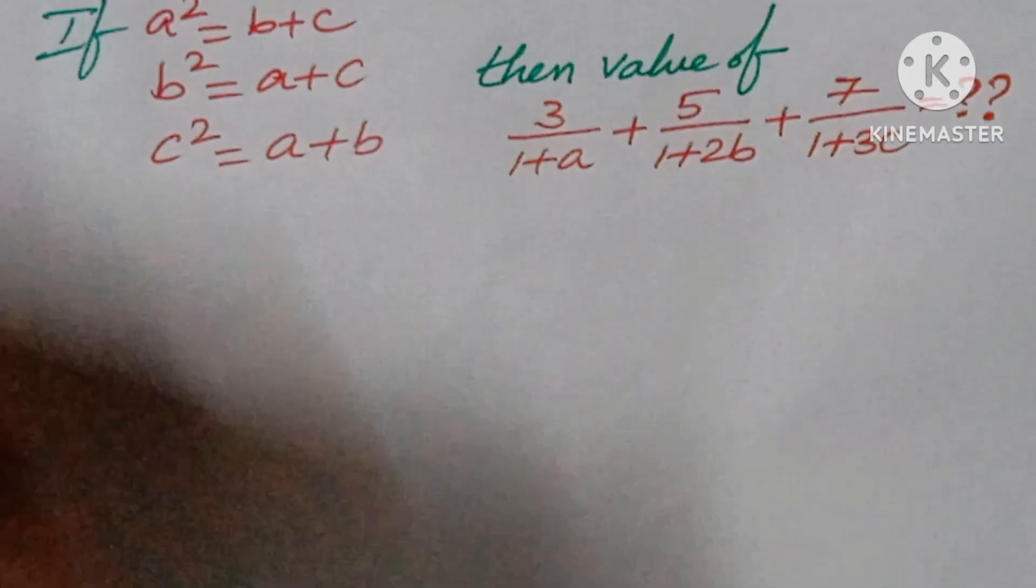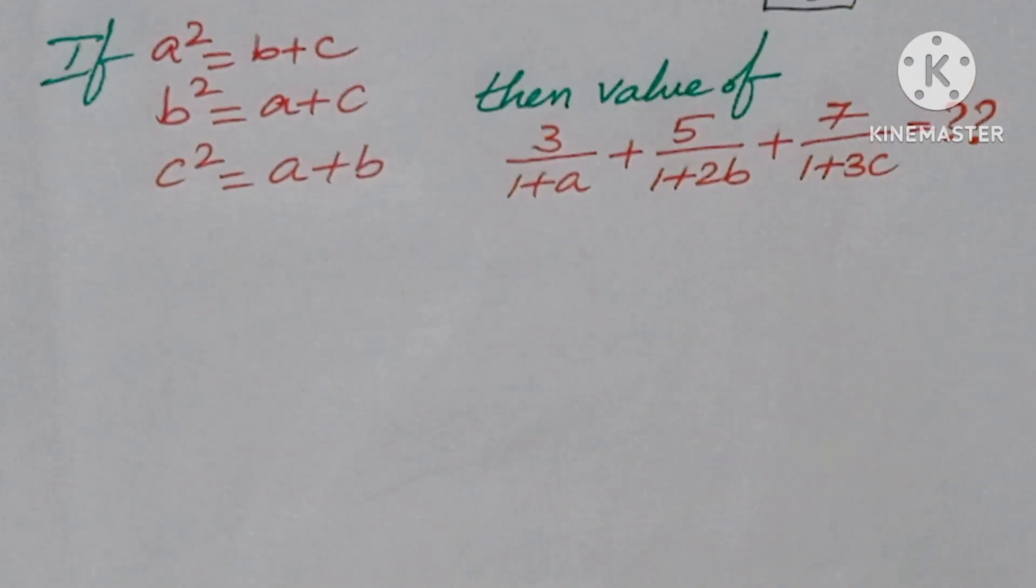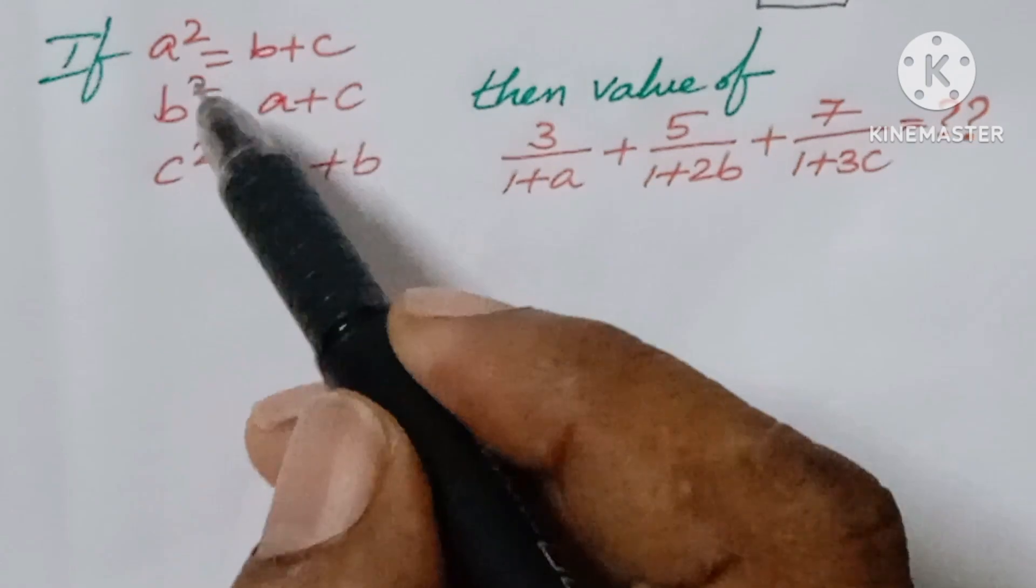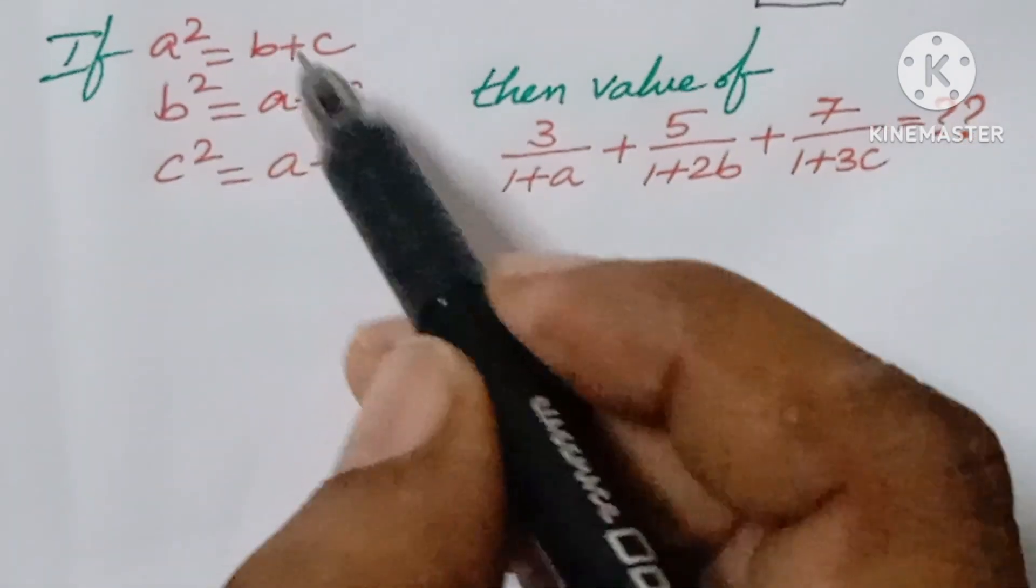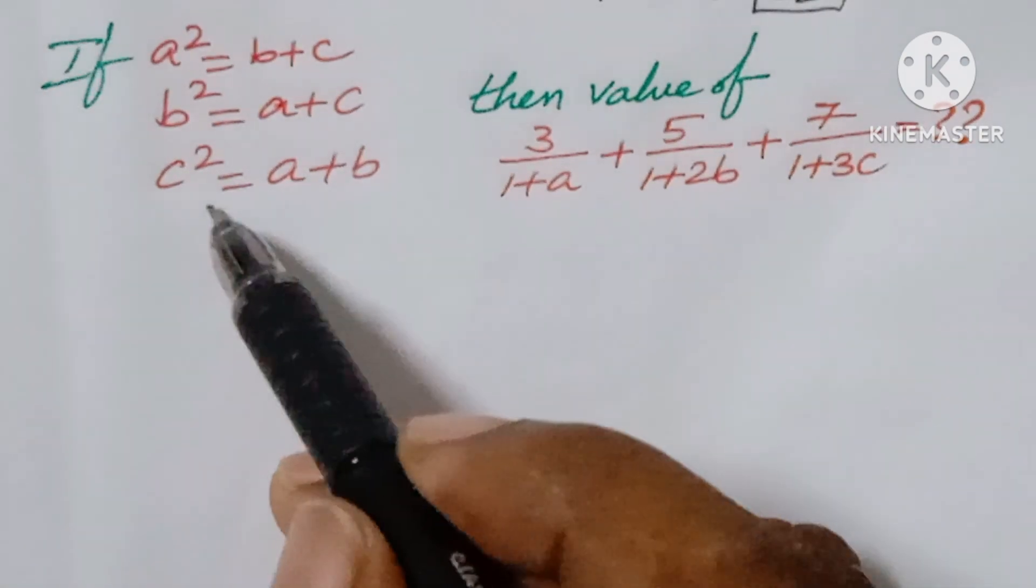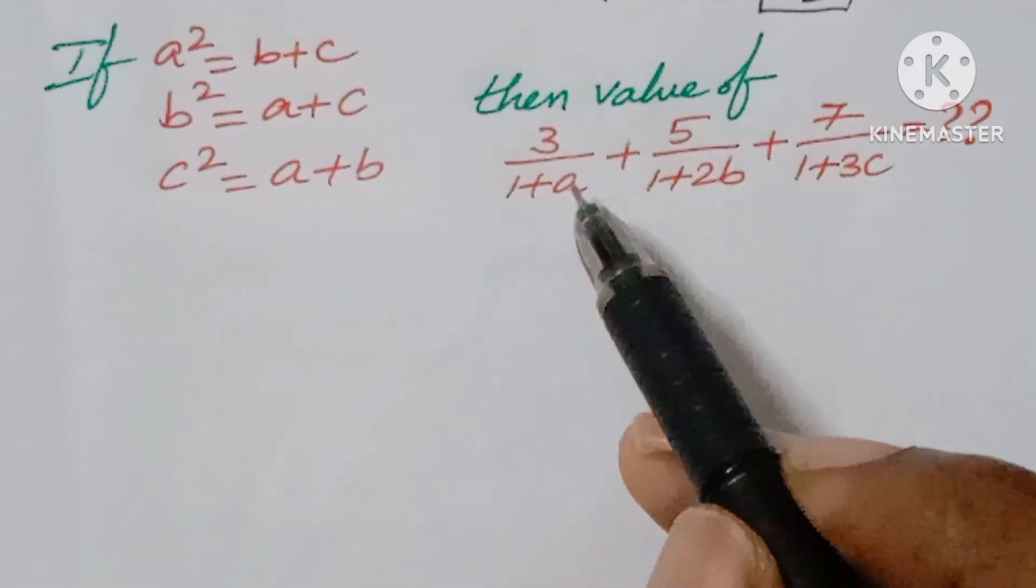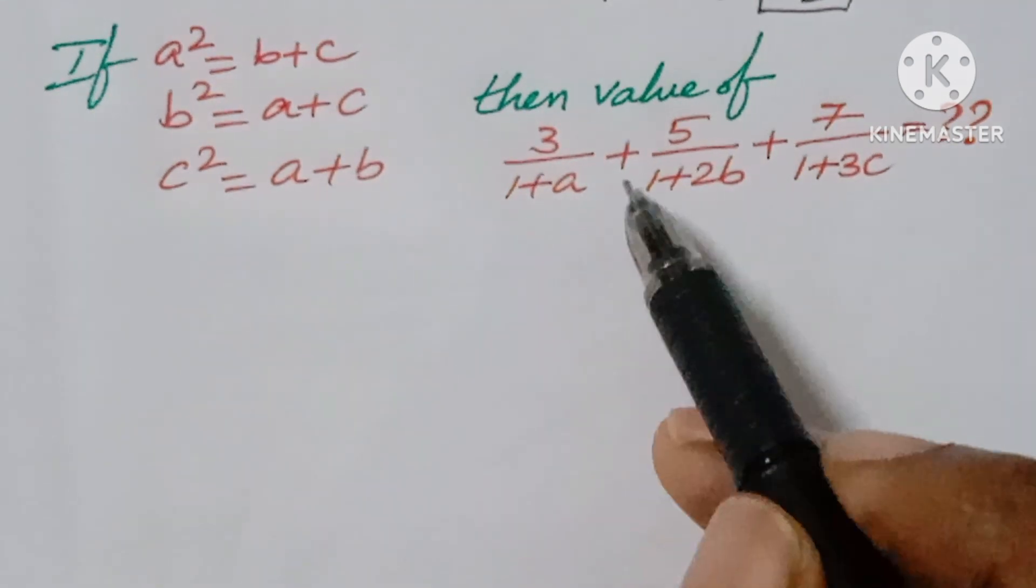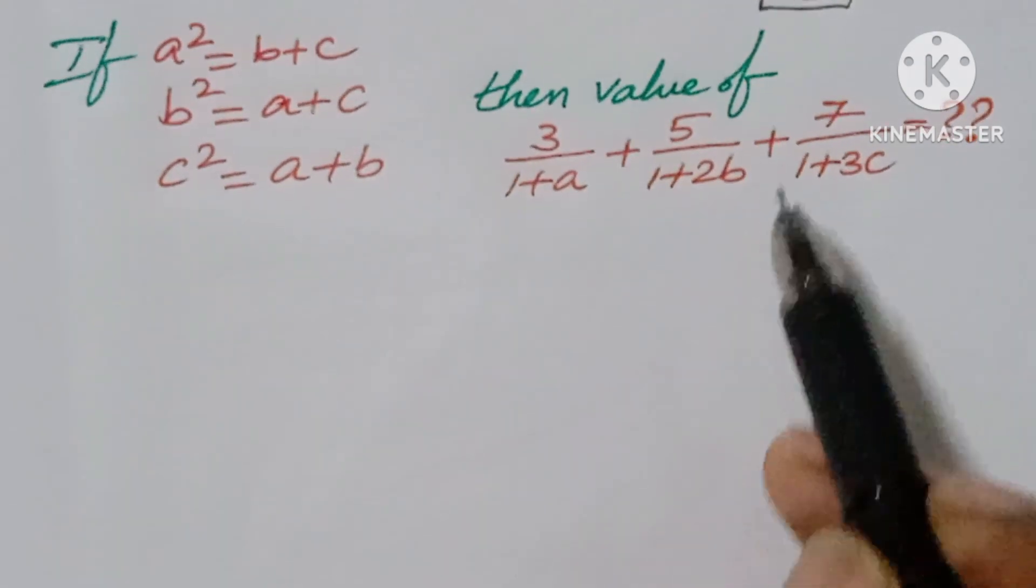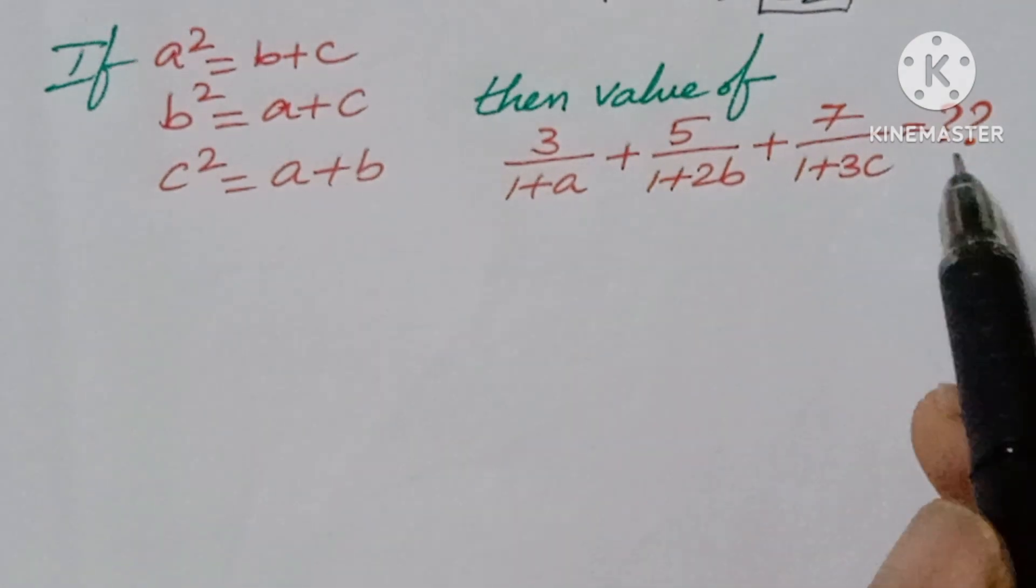Hello, welcome back to Ion CGMAX. Today we are going to see one algebra problem. The question is: given if a² = b + c, b² = a + c, c² = a + b, then find the value of 3/(1+a) + 5/(1+2b) + 7/(1+3c).